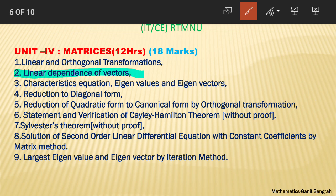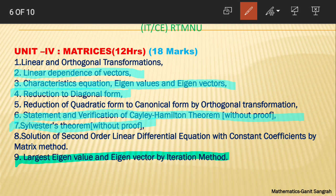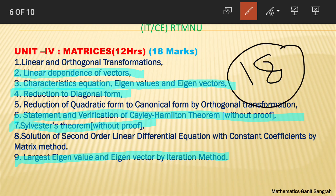The topics you need to do in this unit: linear dependence of vectors — one bit comes on this. Then characteristic equation, eigenvalues, eigenvectors, reduction to diagonal form — one bit comes on this, covering these three topics together. After that, statement and verification of Cayley-Hamilton theorem, then Sylvester's theorem, and one more topic: largest eigenvalue and eigenvector by iteration method. If you've done these 5 topics, you're confirmed for 18 marks in matrices.